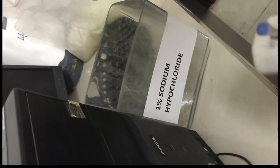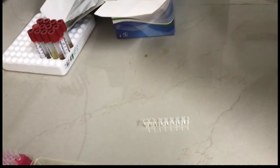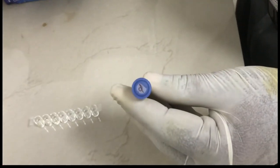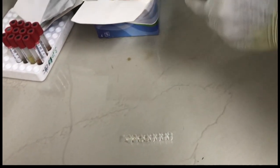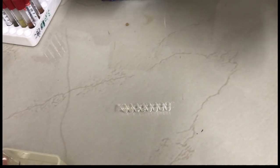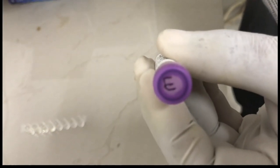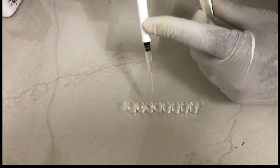Discarding the tips in one percent sodium hypochlorite. Now we are taking control D. Control D is being put into the fourth well. This is control E, which we will take as the fifth control and put into the fifth well. 50 microliters of each is being put into the wells.